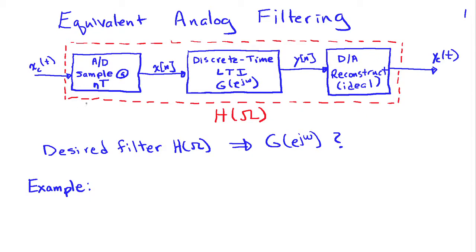As shown in this block diagram, we have some continuous-time signal xc(t) that we desire to filter. We sample that signal at intervals of nT, apply a discrete-time filter with frequency response G(e^jω) to the sampled signal x(n), which produces an output y(n). That is then applied to a digital-to-analog converter, which reconstructs an analog signal using ideal reconstruction, giving us the output yc(t).